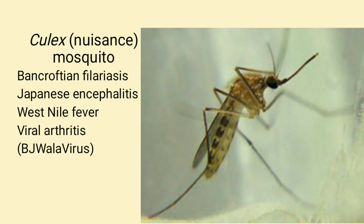Culex is also called the nuisance mosquito. It transmits bancroftian filariasis, Japanese encephalitis, West Nile fever, and viral arthritis. Mnemonic: BJW virus — B for bancroftian filariasis, J for Japanese encephalitis, W for West Nile fever, and virus for viral arthritis.